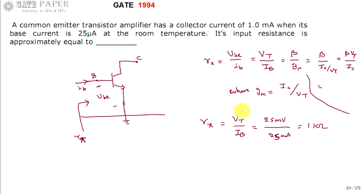Otherwise if you want to use this equation beta by gm, you must calculate gm first. Gm is ic by vt. So ic is 1 milli ampere divided by 25 millivolts. This is 0.04 ampere per volt, otherwise 40 milli amperes per volt.